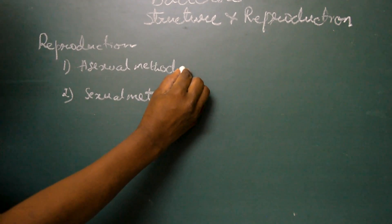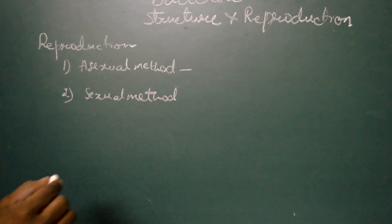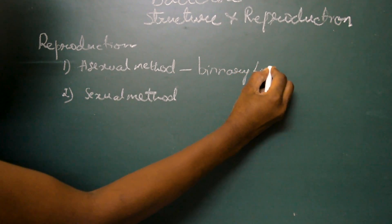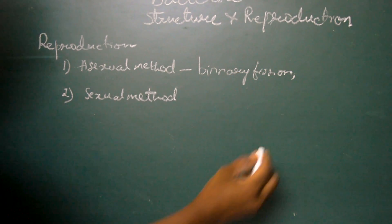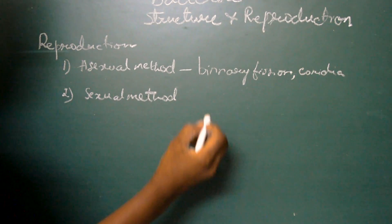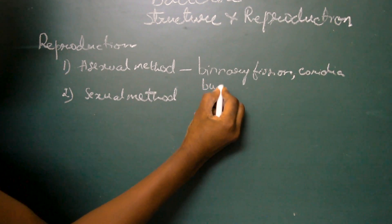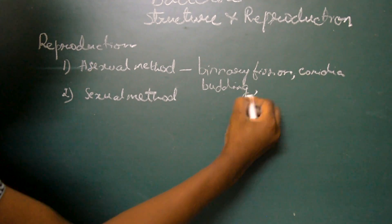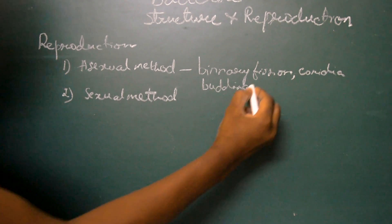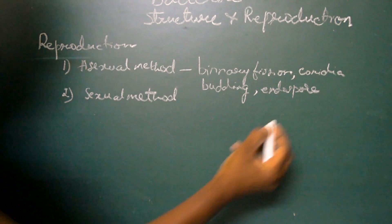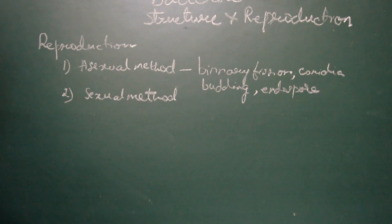Under asexual method of reproduction the most common one is binary fission. They also reproduce by the formation of gonidia. Some type of bacteria also show budding, and certain pathogenic bacteria show endospore formation.